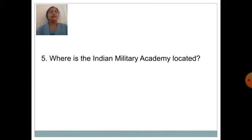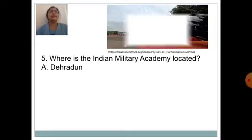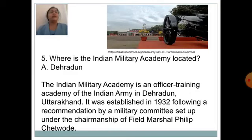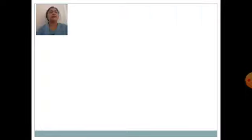Where is the Indian Military Academy located? Answer is Dehradun. The Indian Military Academy is an officer training academy of the Indian Army in Dehradun, Uttarakhand. It was established in 1932, following a recommendation by a military committee set up under the chairmanship of Field Marshal Philip Chetwode.